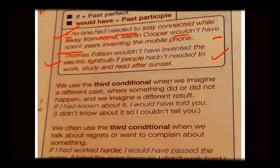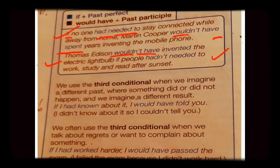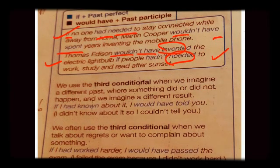In this example, the if-clause comes at the end of the sentence. In the first part, 'would have' is there, and in the if-clause, 'had' is there. Both share the common thing — the third form of the main verb. In the first part, 'invented' is the third form, and in the second part 'needed' is the third form.